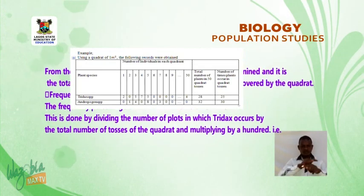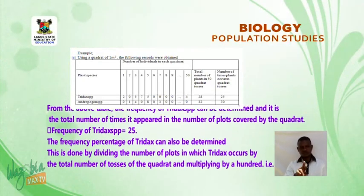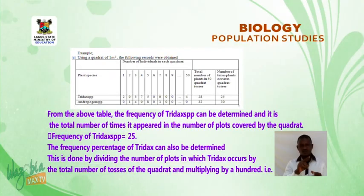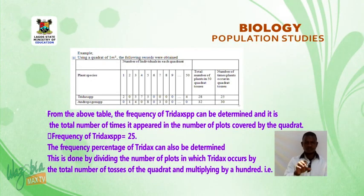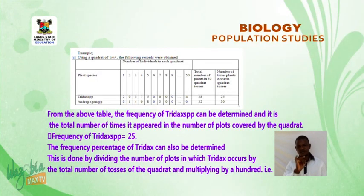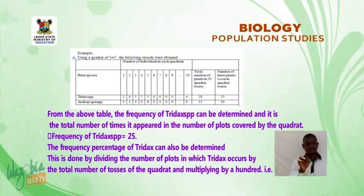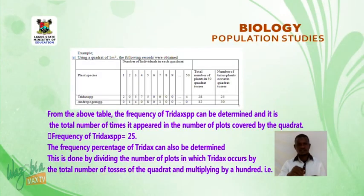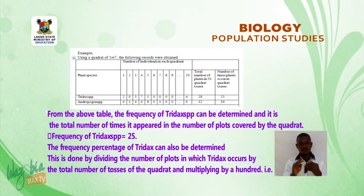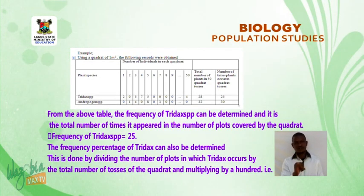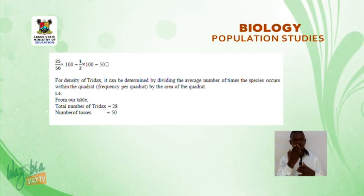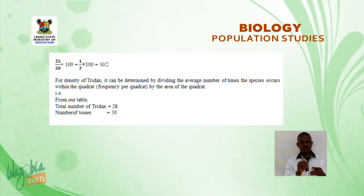Example — Using a quadrat of 1 meter square, records were obtained. The frequency of trig-dark species can be determined as the total number of times it appeared across the number of plots covered: frequency of trig-darks = 25. The frequency percentage = (number of plots in which trig-darks occurs ÷ total number of tosses) × 100 = (25 ÷ 50) × 100 = 50%.